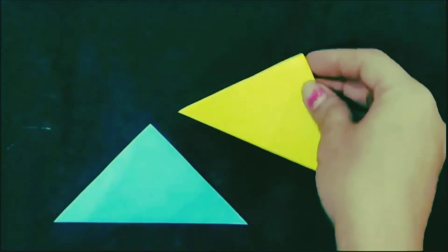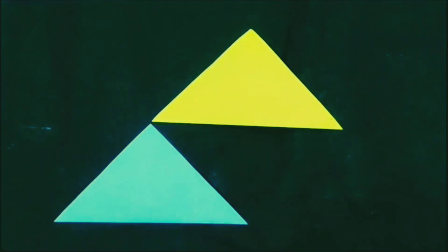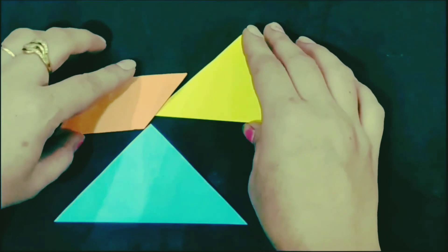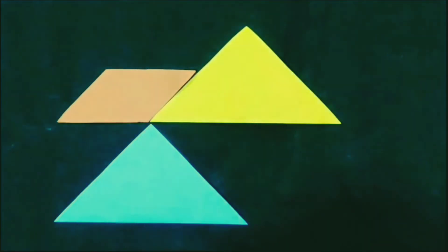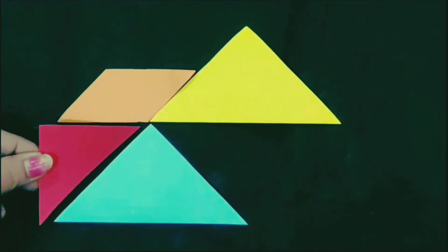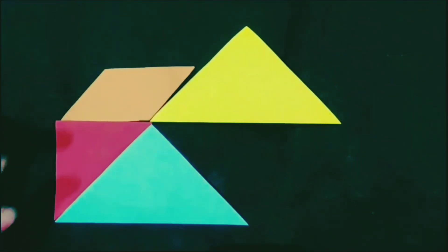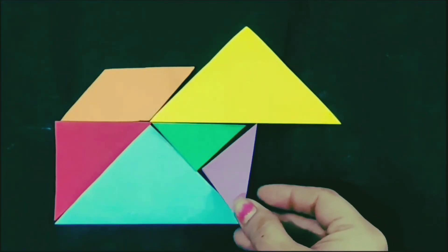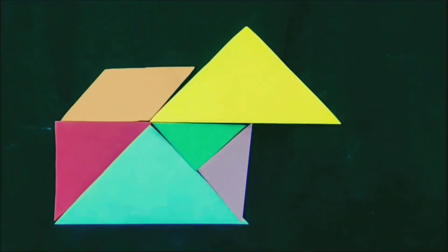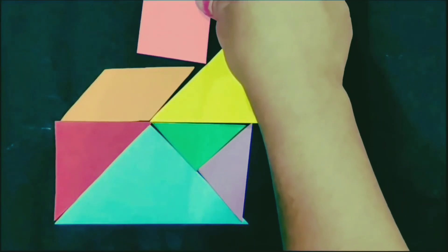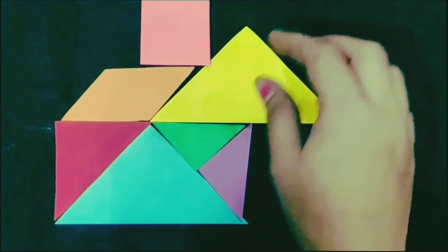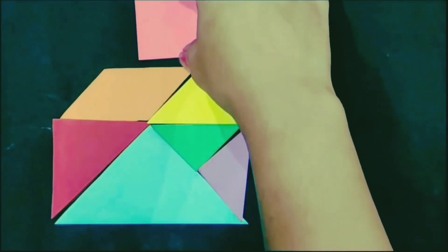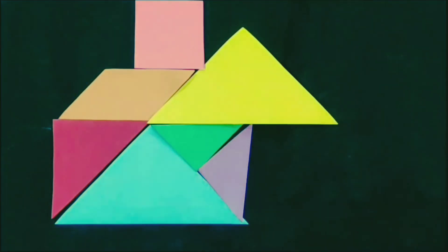Now, students, again I join these 7 pieces of 10-gram in another way to make another picture. Let's see which picture is formed. Students, all the pieces of 10-gram are joined and the picture is ready. Students, I think this is a picture of a hut.